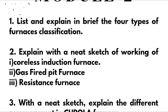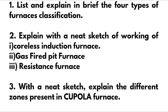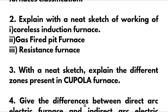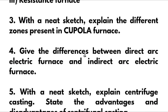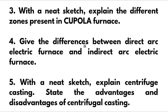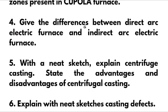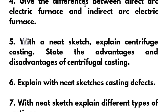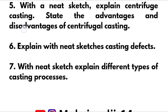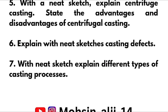In Module 2, we have: list and explain in brief the four types of furnaces classification; explain with a neat sketch the working of coreless induction furnace, gas-fired pit furnace, and resistance furnace; explain the different zones present in cupola furnace with a neat sketch; give the difference between direct arc electric furnace and indirect arc electric furnace; explain centrifugal casting with a neat sketch, stating its advantages and disadvantages; explain casting defects with neat sketches; and explain different types of casting processes.